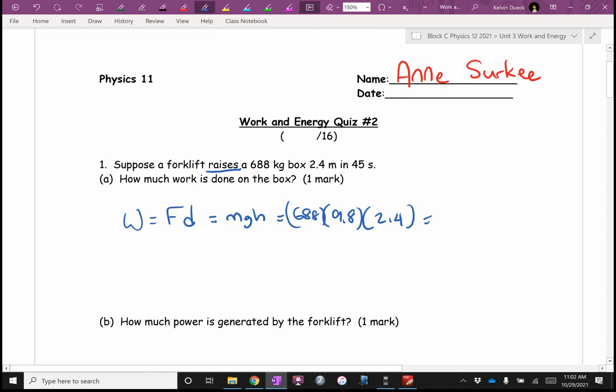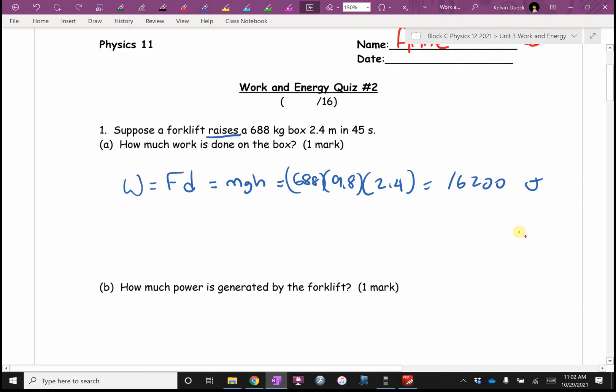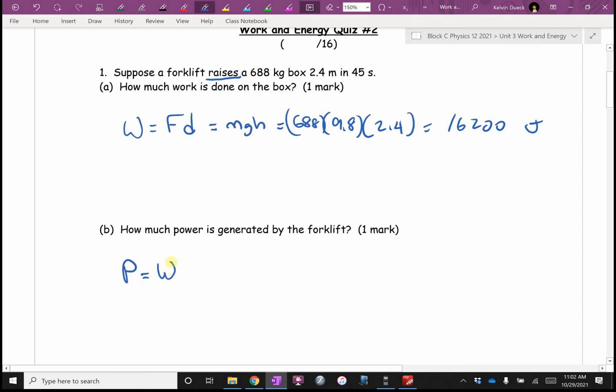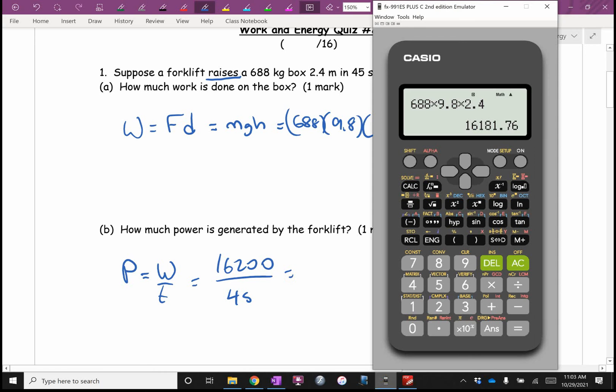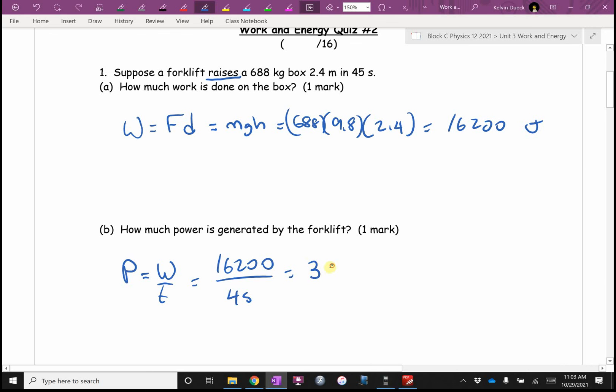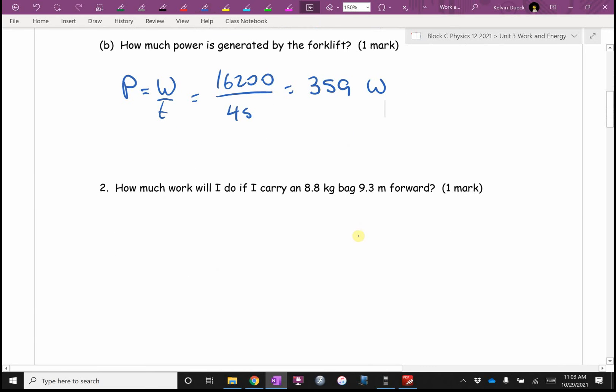Units joules, one mark. How much power? Well, power is work over time, so it's gonna be sixteen thousand two hundred. I'm gonna use my answer button, divided by forty-five, and I get 359.6. I'll go 359 watts.